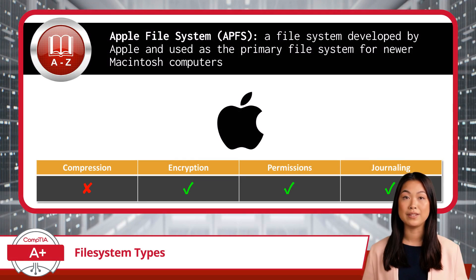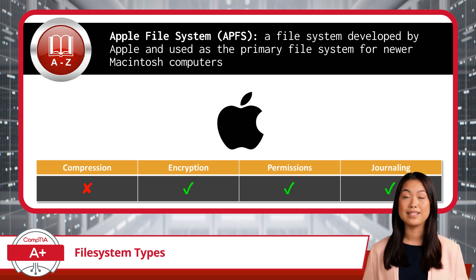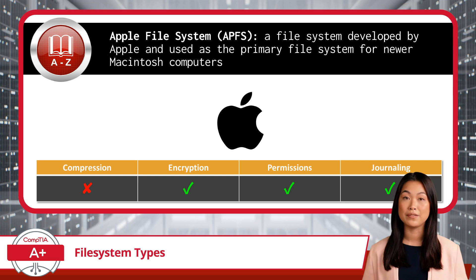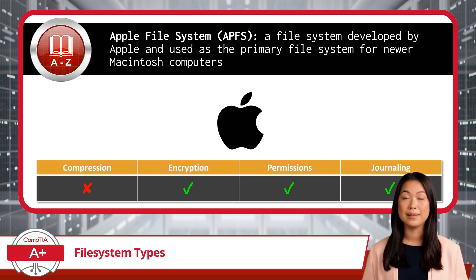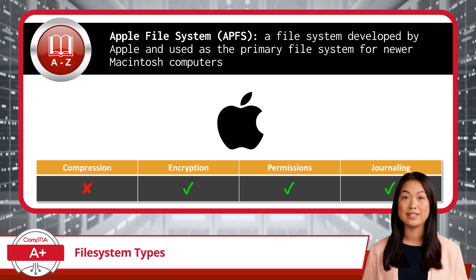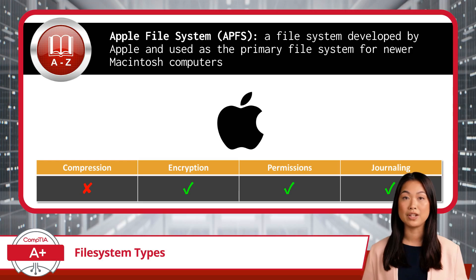For macOS users, the Apple File System, abbreviated APFS, is a file system developed by Apple and used as the primary file system for newer Macintosh computers. APFS is optimized for solid-state drives, offering high performance and strong encryption capabilities. It supports file and volume encryption, as well as snapshot and cloning features. APFS does not natively support file compression, but does support permissions and journaling.